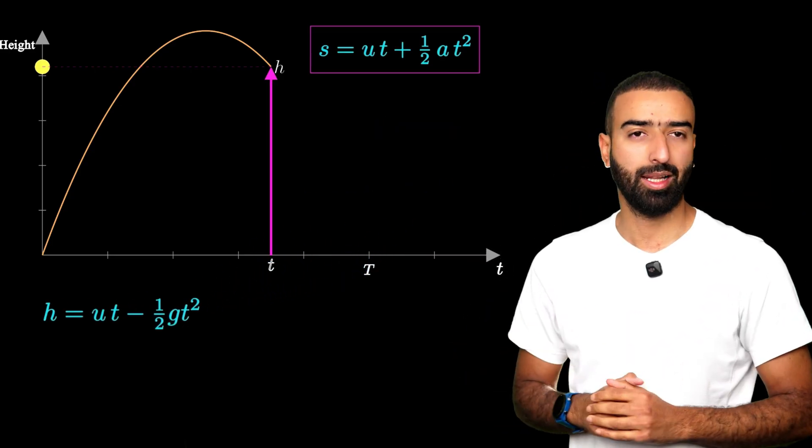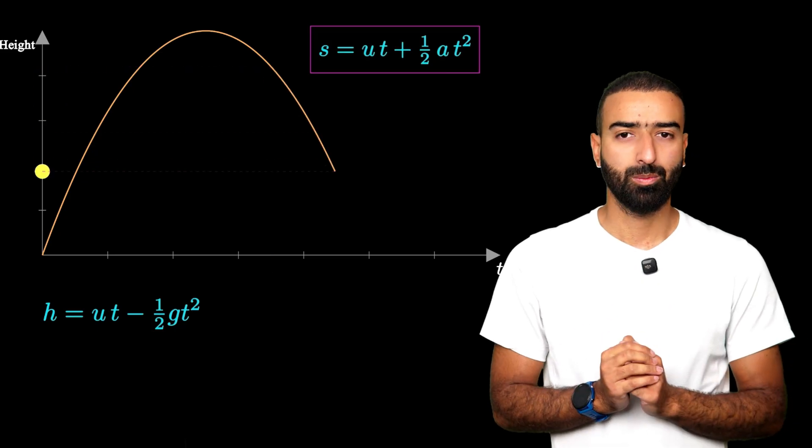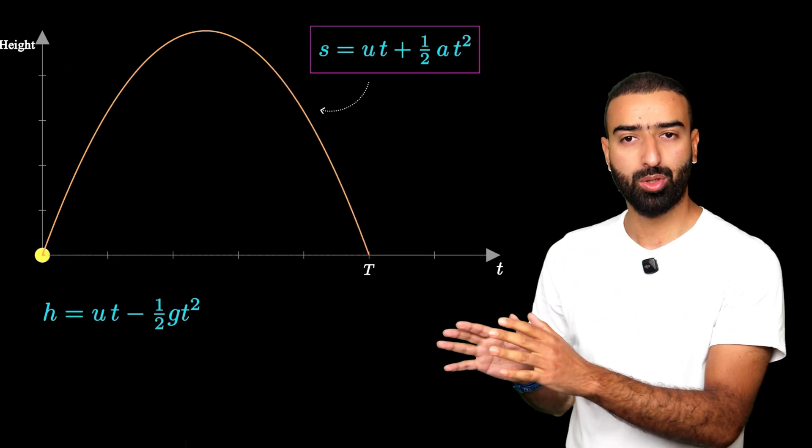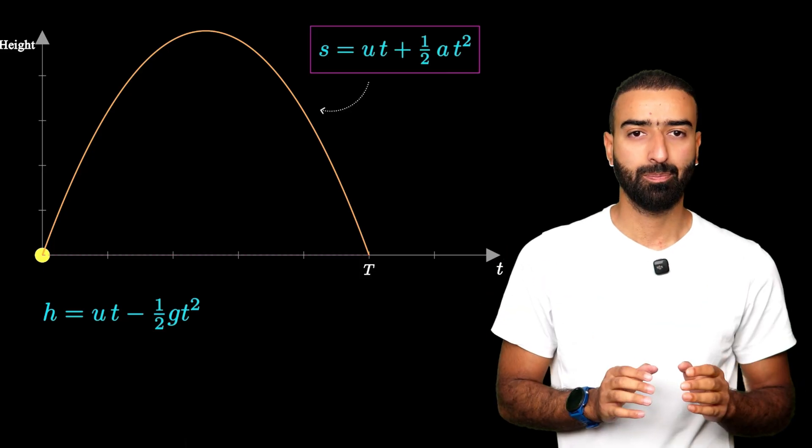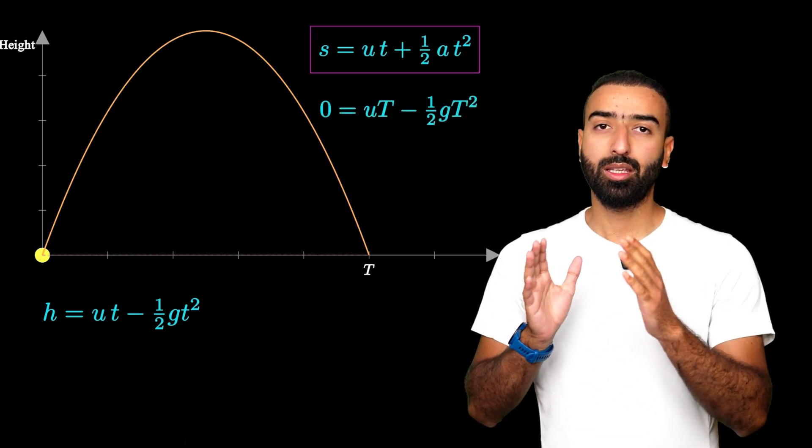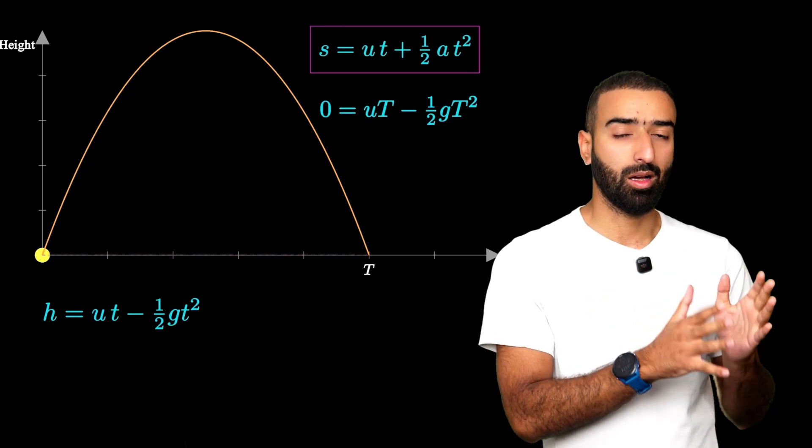Let's bank this for later. Now, what do we do? Well, let's use the same equation on the entire motion for the complete journey. If I do that, the equation I'll get is 0 equals UT minus half GT square.